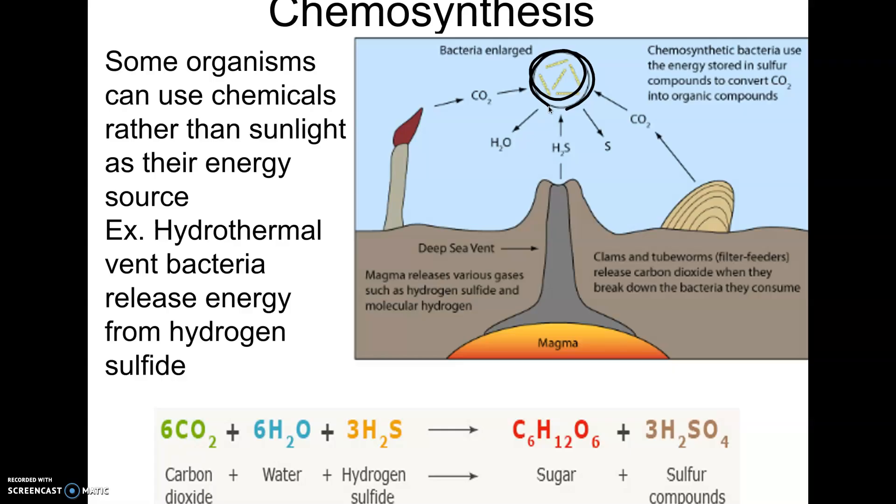have the ability to take in carbon dioxide and hydrogen sulfide and sulfur compounds, and instead of using sunlight to build energy, they're using basically energy trapped in the chemical bonds of these chemicals, sulfides and things, and they make sugar from it.